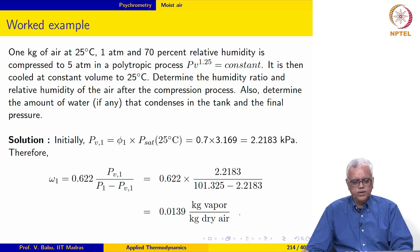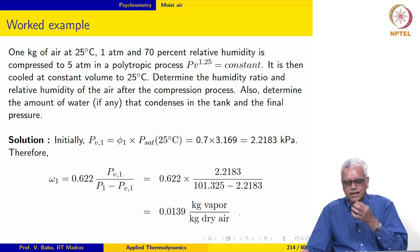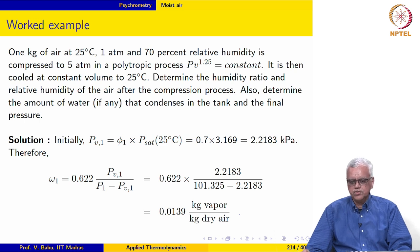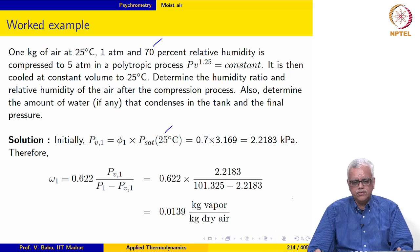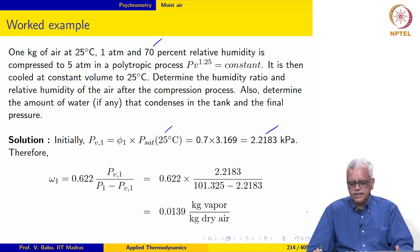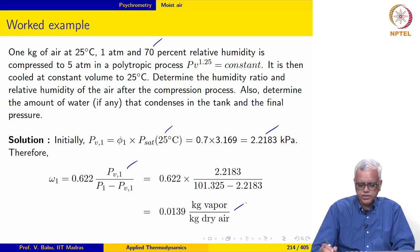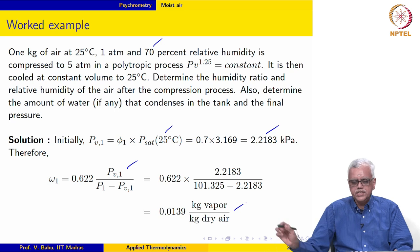The last example: 1 kg of air at 25 degree Celsius, 1 atmosphere, and 70 percent relative humidity is compressed to 5 atmospheres in a polytropic process. It is then cooled at constant volume to 25 degree Celsius. Determine the humidity ratio and relative humidity after compression, and the amount of water that condenses and the final pressure. In the initial state, since relative humidity is given and P_sat of water at 25 degree Celsius is known, the partial pressure of water vapor initially evaluates to 2.2183 kilopascal and the humidity ratio is 0.0139 kg vapor per kg dry air.